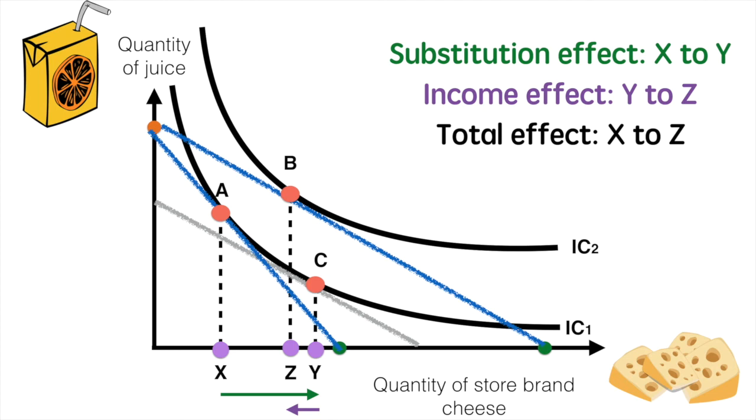However, due to store brand cheese being an inferior good, the income effect counters some of this movement and has a negative effect. The overall level of consumption then falls from Y to Z.